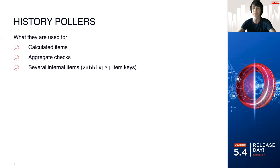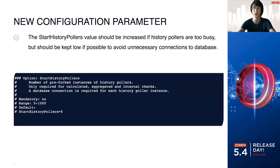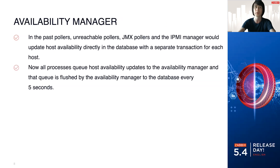The history poller comes with a new configuration parameter. You should keep in mind that more is not always better, and you should only increase the value of how many history pollers are being pre-forked if they are too busy according to internal self-monitoring. Keep it as low as possible. As for the availability manager, all kinds of pollers were updating availability directly in the database, causing many more transactions. Now with this separate availability manager, all processes — pollers, trappers — communicate to the availability manager, and once every five seconds it will flush the statistics to the database.